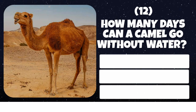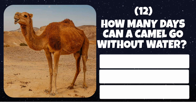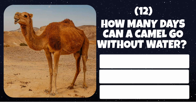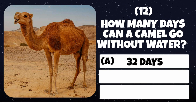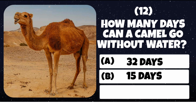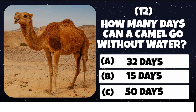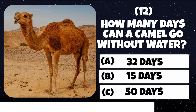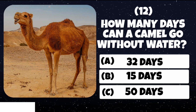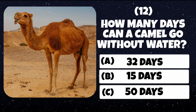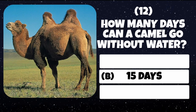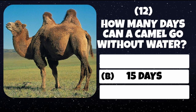Question number 12. How many days can a camel go without water? Option A: 32 days. Option B: 15 days. Option C: 50 days. Correct answer is 15 days.